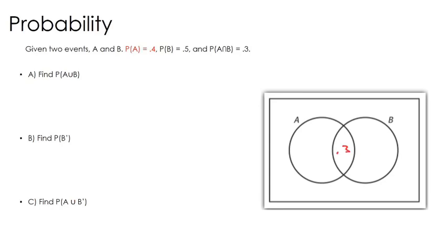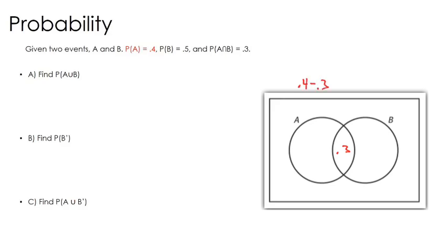We know that the probability of A is 0.4. But we know that 0.3 of it is in the intersection with B. So, I can do 0.4 minus 0.3, and that gives me that the probability of A happening and only A happening is 0.1.